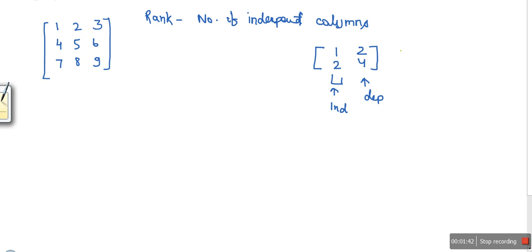So in a matrix, rank actually tells you how many columns are independent. Let me take one more example: 1, 2, 3, 2, 3, 4 and 3, 5, 7.